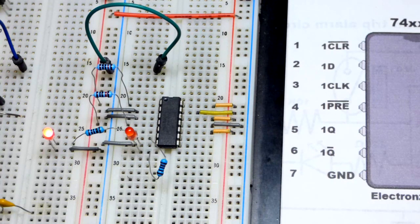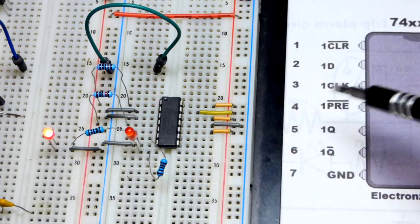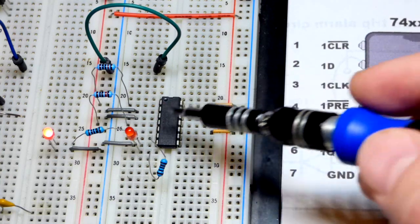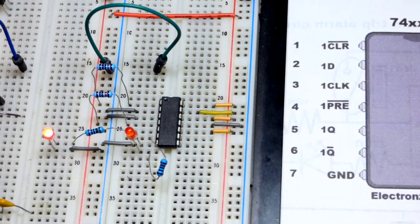Now we hit the preset pin. That set it, so now the output is high. And since the clock pin is not doing anything, it's low, it's going to lock into either state. So you can just use this as a simple set-reset flip-flop if you want to.